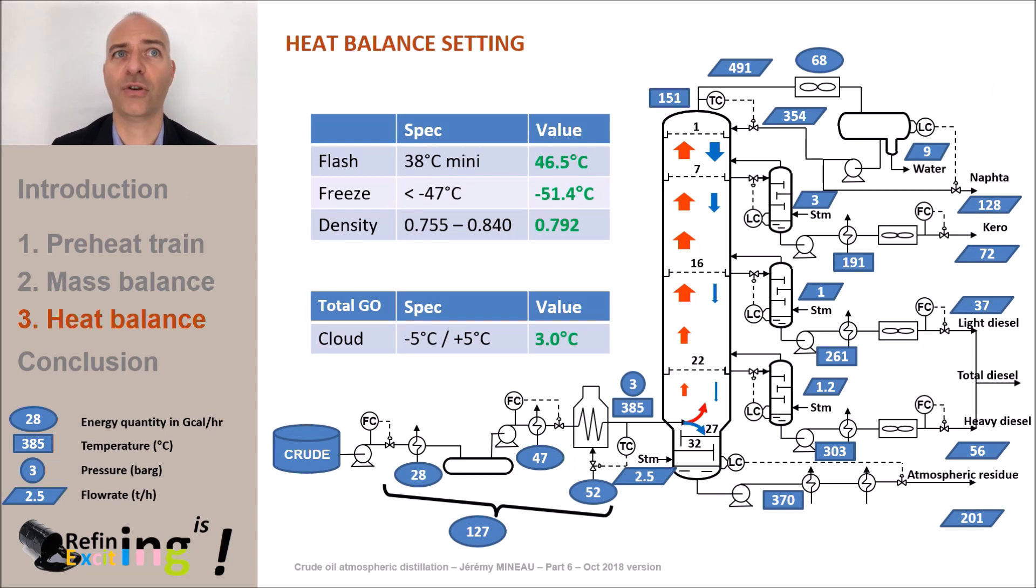In the previous videos, we have established the overall material balance of the column and we have seen that the heat balance was a consequence of the mass balance. We have seen as a reminder the very large amount of energy required both in the hot and cold parade train and in the furnace. We also repeated the very large amount of energy lost at the overhead of the column since we are talking about 68 giga calories per hour. It means more than the energy involved in the furnace. We cannot afford to lose this energy to the atmosphere.